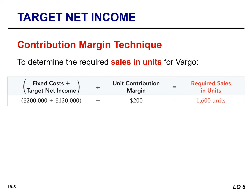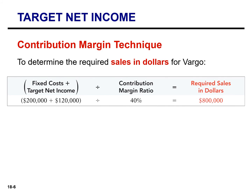Using the contribution margin technique, we simply divide the sum of fixed cost and target net income by the unit contribution margin. Again, to achieve its desired net income of $120,000, Vargo must sell 1,600 units. To achieve its desired target net income of $120,000, Vargo must generate sales of $800,000.